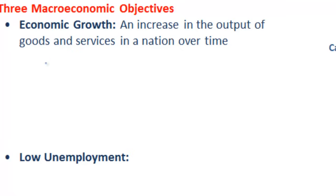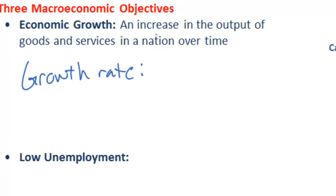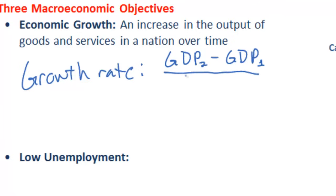There is in fact a very simple formula to calculate the economic growth rate of a nation. What we need is two years in which we can measure the GDP between one year and the next. To calculate the growth rate in a nation, all we need to do is take the GDP of year two, subtract the GDP of year one, and divide it by the GDP of year one.